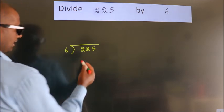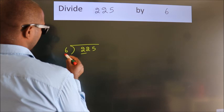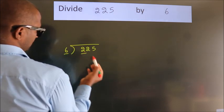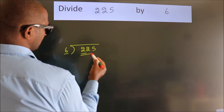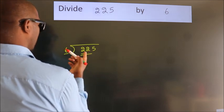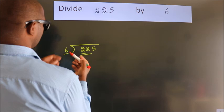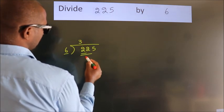Next. Here we have 2. Here 6. 2 smaller than 6. So we should take 2 numbers. 22. A number close to 22 in sixth table is 6 threes 18.